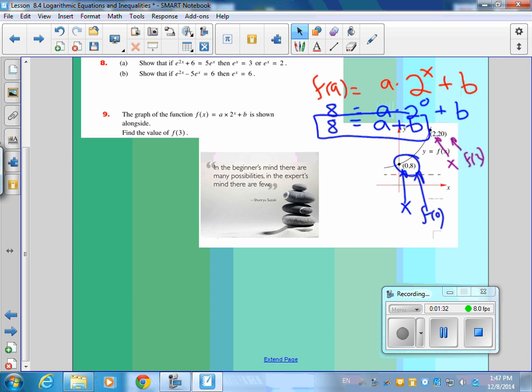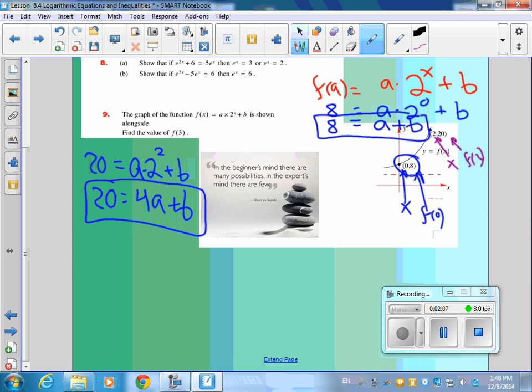2, 20. So then we go f, let's go over here, f of 2, and so you go a times 2 to the 2 plus b is equal to what? 20. So that's what f of 2 is. It's 20. So this is going to be 20 is equal to 4 times a plus b. And there's your second equation. Does anything confusing happen there, or are you okay with that?